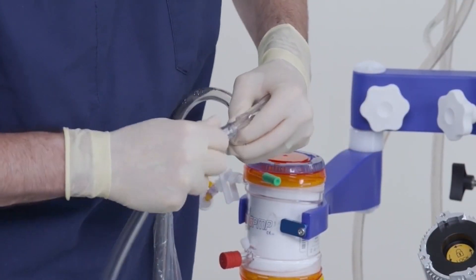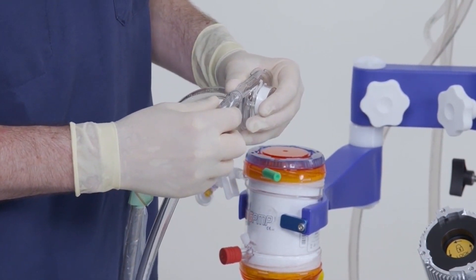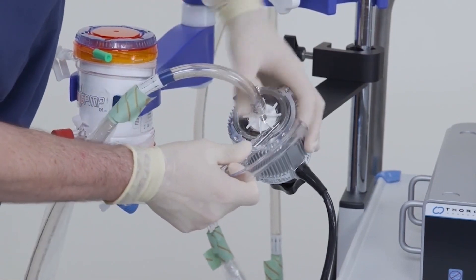Then, connect a 12 to 18 inch tubing to the pump outlet in the same manner. Place the pump in the Centromag motor, securing it with the retaining screw.